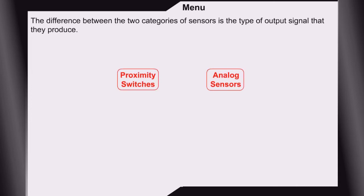The difference between the two categories of sensors is the type of output signal that they produce. Let's look at these ultrasonic sensors.